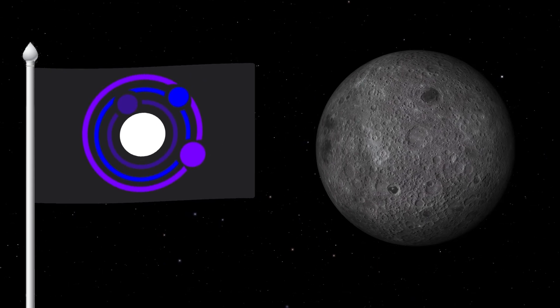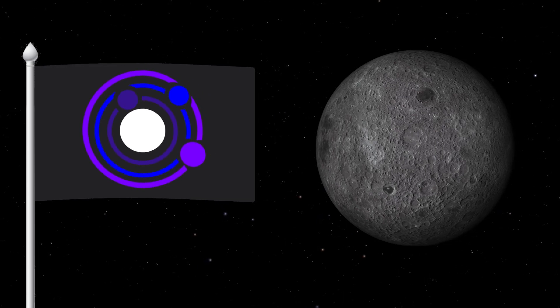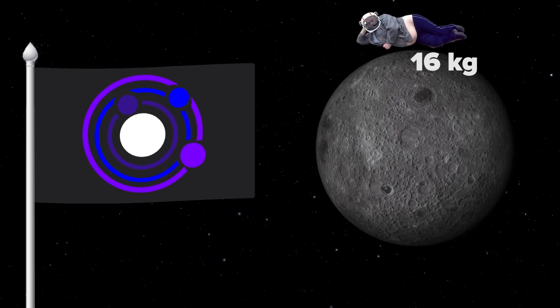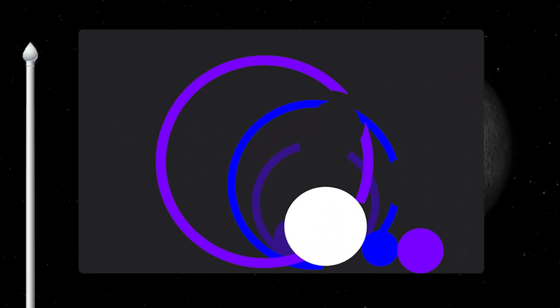By the way, the weight of objects on the Moon is about one-sixth of their weight on Earth. For example, a person weighing 100 kilograms on Earth would weigh about 16 kilos on the Moon. Let's apply the Moon's gravity to its flag.